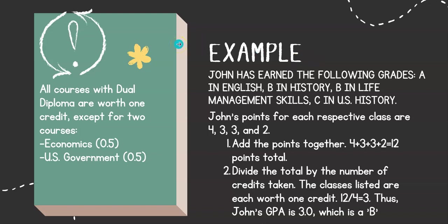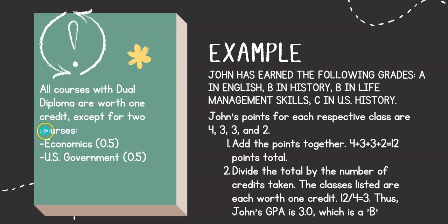Here is an example. One thing you should know is that all courses in dual diploma are worth one credit, except for two courses — economics and U.S. government — which are each worth half a credit.